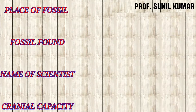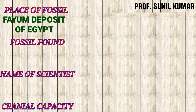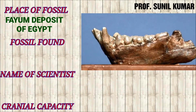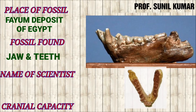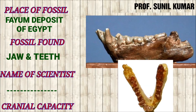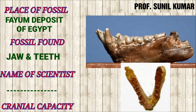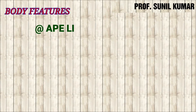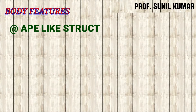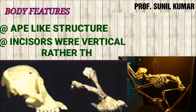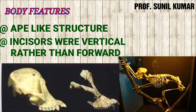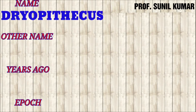Propliopithecus looks somewhat like a monkey. The place of fossil discovery was the Fayum deposit of Egypt, and what was found in the fossil was the jaw and the teeth — the entire fossil was not available. The scientist name and cranial capacity are not known for Propliopithecus. Regarding body features, they had a totally ape-like structure, and their incisors were vertical rather than forward.